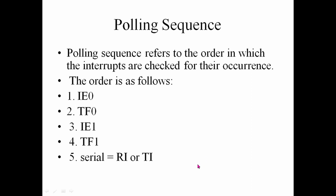This is the polling sequence. The microcontroller checks interrupts in this order: first IE0 (External Interrupt 0), then TF0 (Timer 0), then IE1 (External Interrupt 1), then TF1 (Timer 1), and finally serial communication.